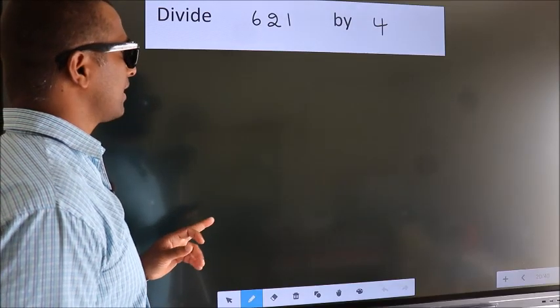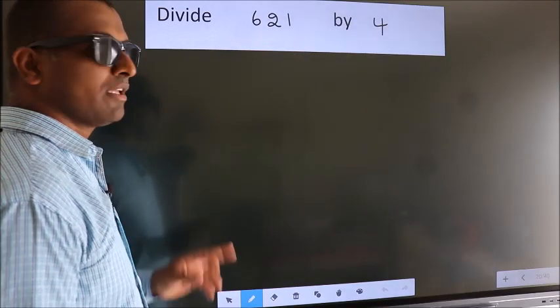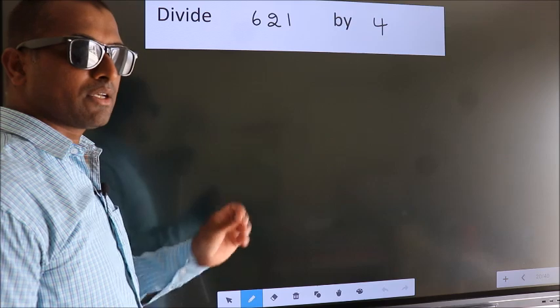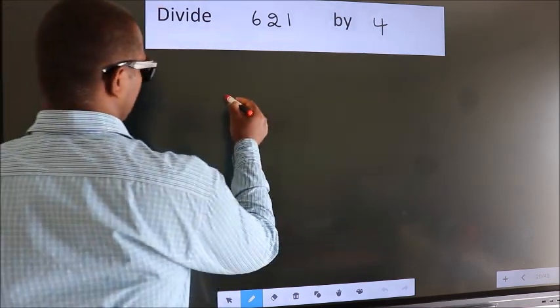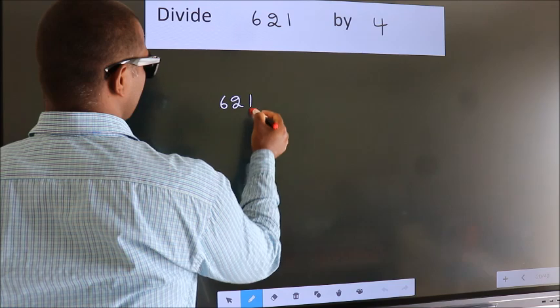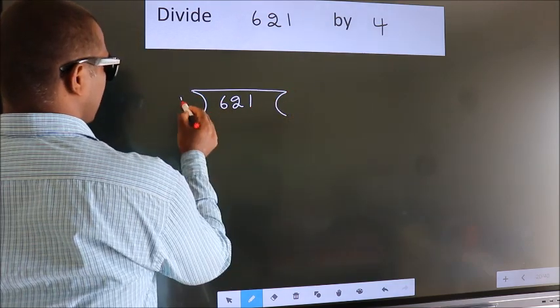Divide 621 by 4. To do this division, we should frame it in this way: 621 here, 4 here.